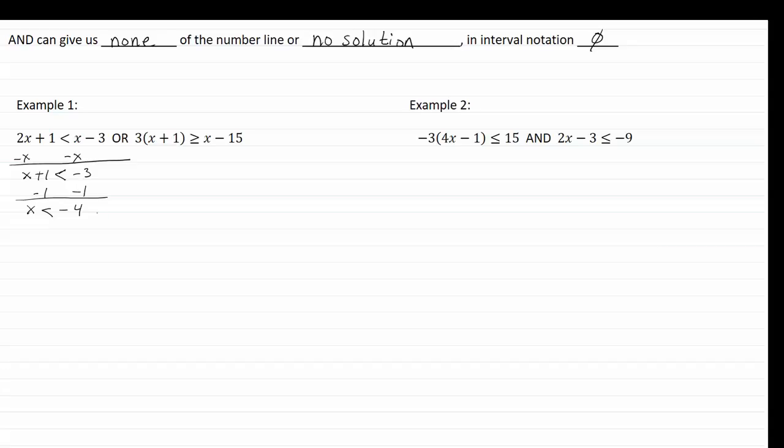Or we're going to distribute here. We get three x plus three, greater than or equal to x minus fifteen. Subtract our x's out. I get two x plus three, greater than or equal to negative fifteen.